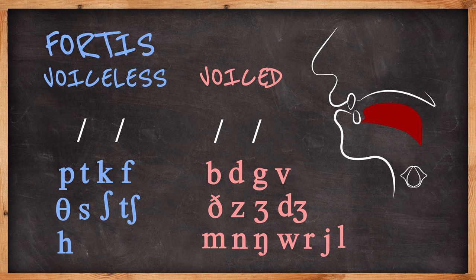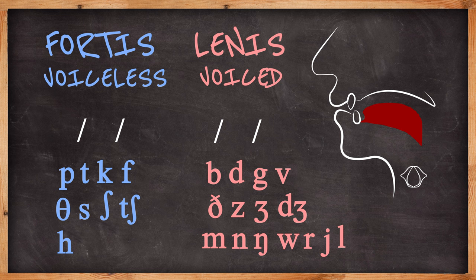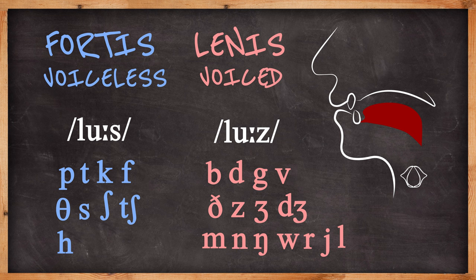Voiceless sounds are also labelled fortis meaning strong because the air is compressed more when we make them. Voiced sounds are soft or lenis. Going back to our example of loose, lose, you can see then that loose ends in a voiceless or fortis sound, whereas lose ends in a voiced or lenis sound.